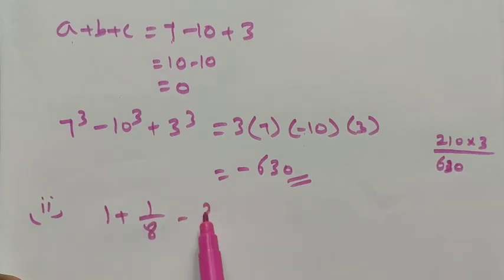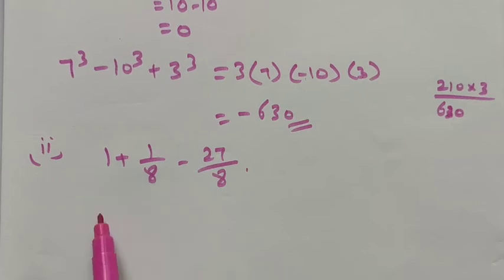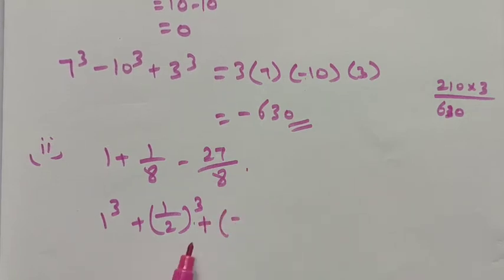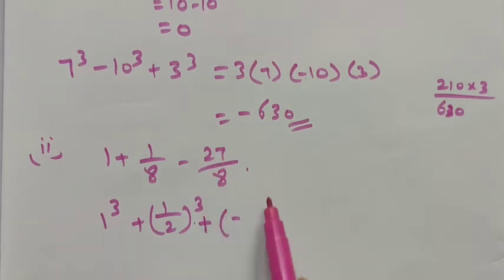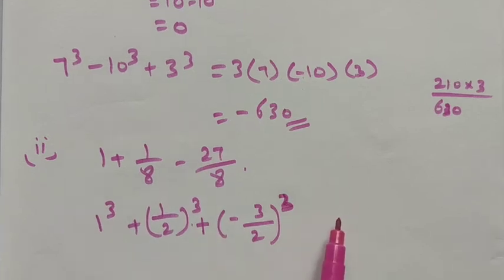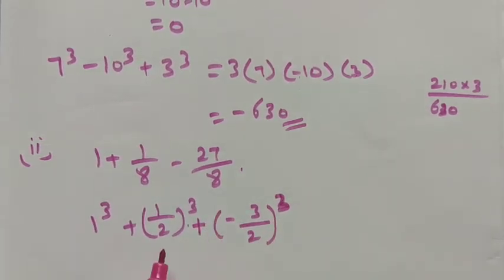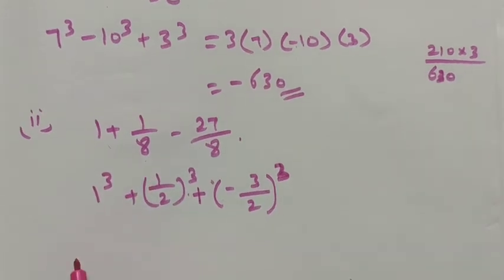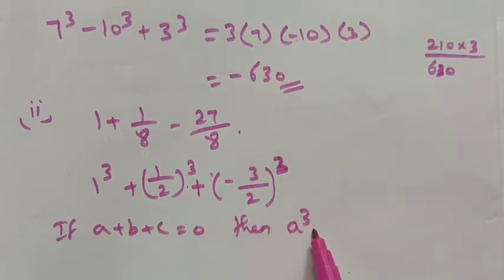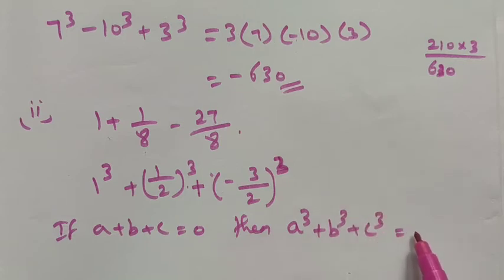For the second expression, 1 plus 1 by 8 minus 27 by 8, we rearrange the terms. 1 cube is 1; 1 by 2 whole cube is 1 by 8; 3 by 2 whole cube is 27 by 8. So we have the form a cube plus b cube plus c cube, and we can use the identity if a plus b plus c equals 0.